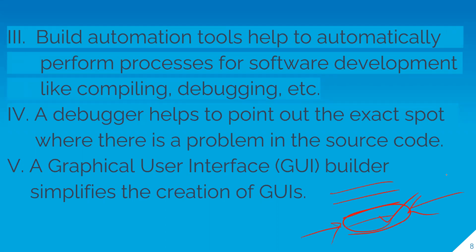A debugger is used in the development process to debug the program — to identify where a problem or error exists in execution. We execute the program line by line using the debugger to find and identify where the problem is.